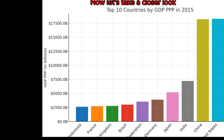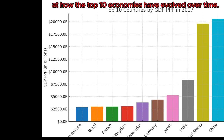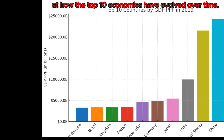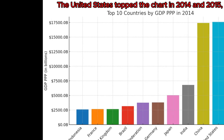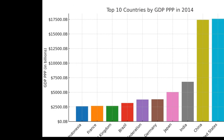Now, let's take a closer look at how the top 10 economies have evolved over time. The United States topped the chart in 2014 and 2015, but starting in 2016, China surged ahead.